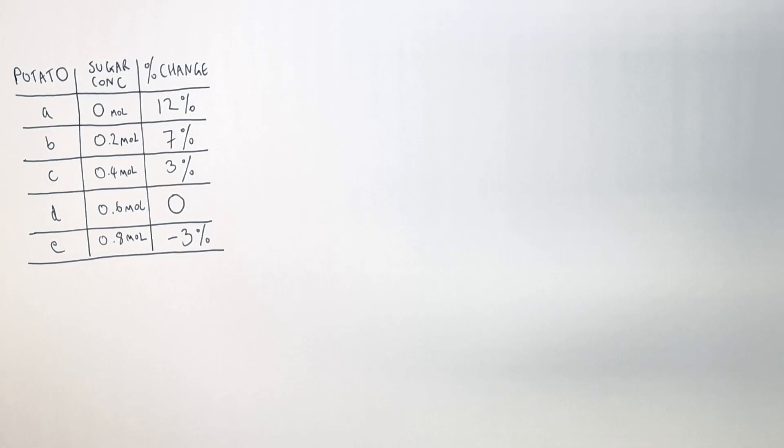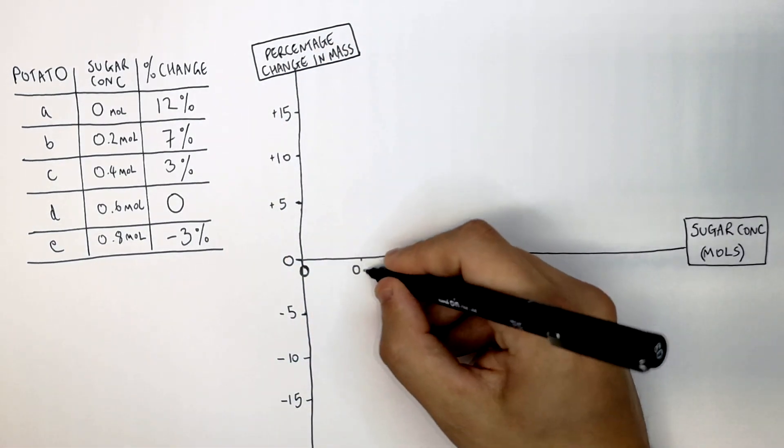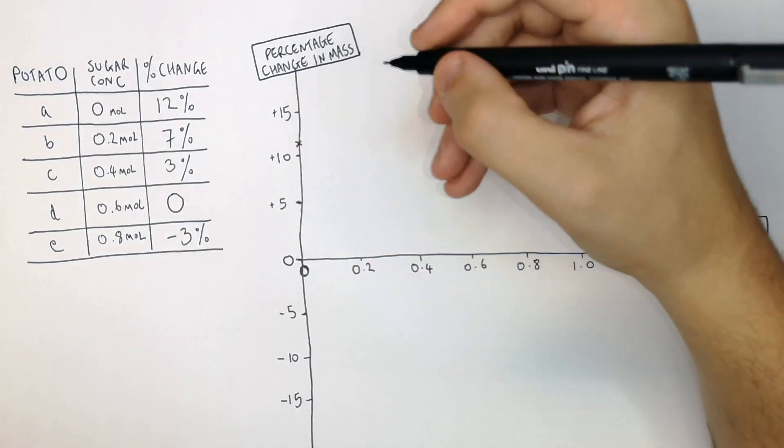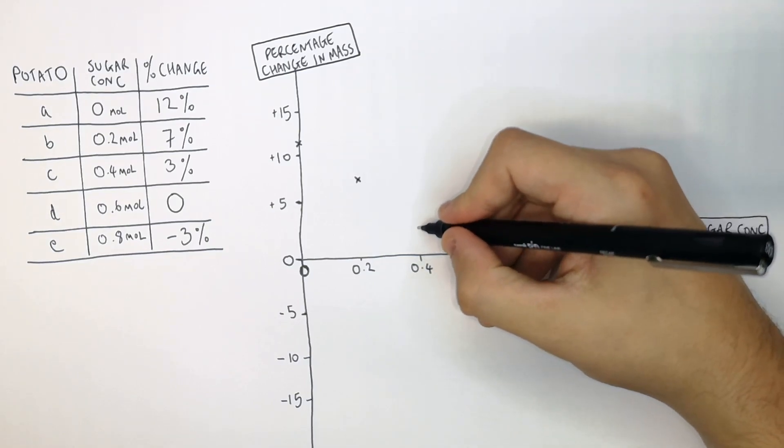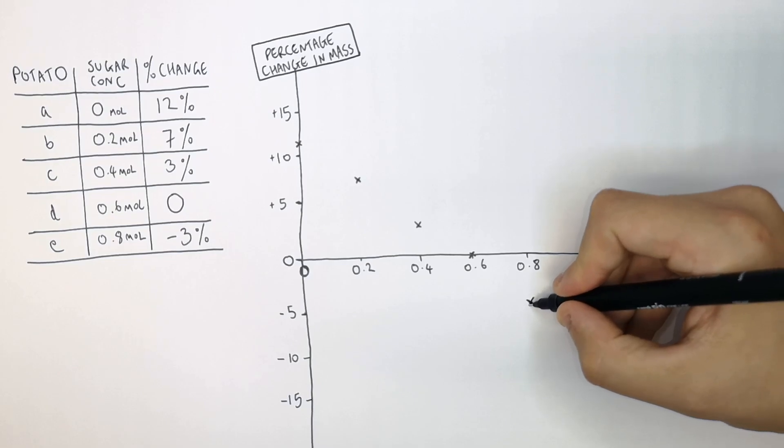So we now have here the percentage change of masses for each of the potatoes and the different sugar concentrations. We're now going to draw a graph. And this is going to be percentage change in mass on the y-axis against sugar concentration on the x-axis. And as you can see here, I'm plotting the percentage change against sugar concentration. And you should get a reasonably straight, inversely proportional straight line.